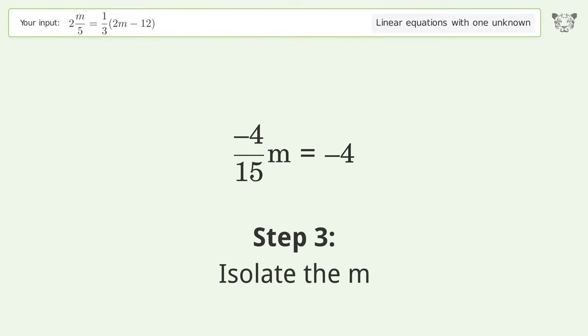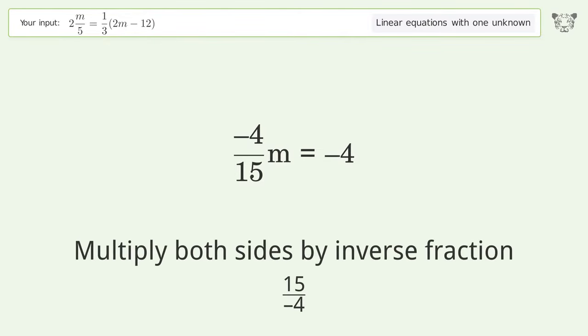Isolate the m. Multiply both sides by inverse fraction 15 over negative 4.